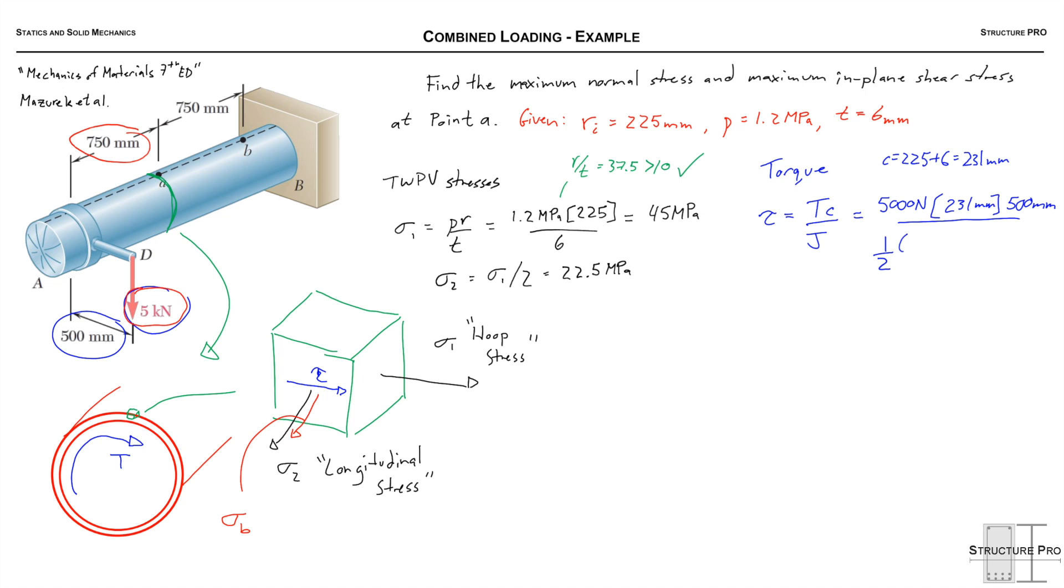For a circular section it's half pi r to the 4, and we're just going to subtract the inside radius from the outside radius, both to the power of 4. We can plug that all into our calculators. We end up with 5.775 over 4.469, or 1.29 MPa. So that's our shear stress.